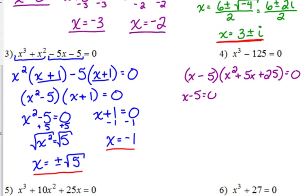So, x minus 5 is equal to 0. That one's easy. x equals positive 5. x squared plus 5x plus 25. I told you yesterday, it doesn't factor any further. So, our only choice is the quadratic formula. So, a is 1. b is 5. c is 25.